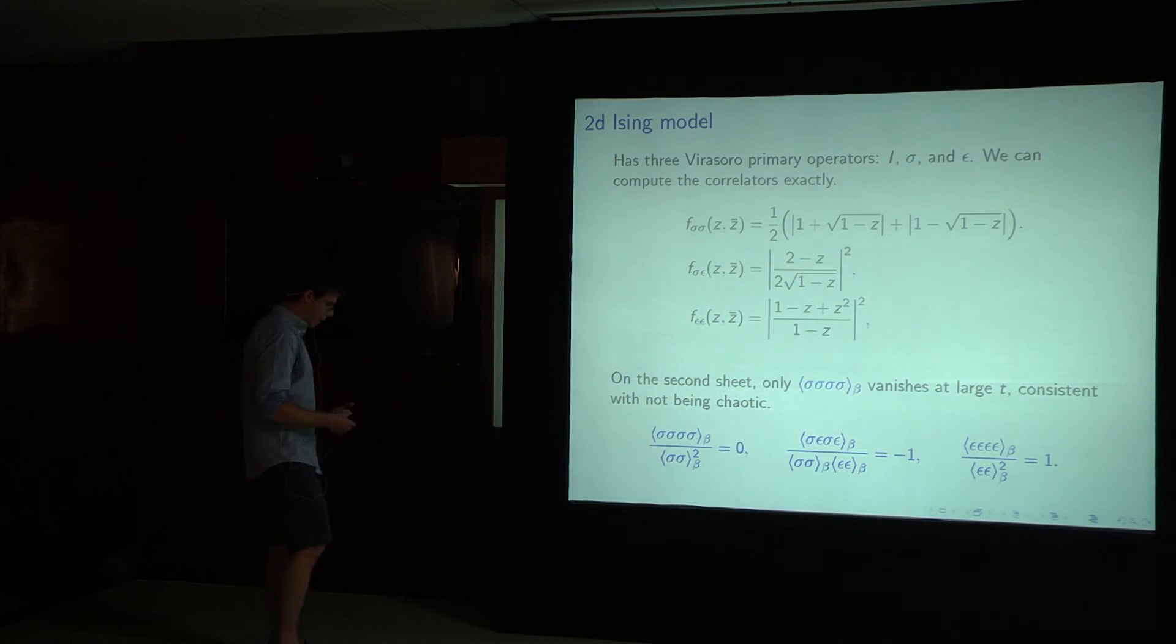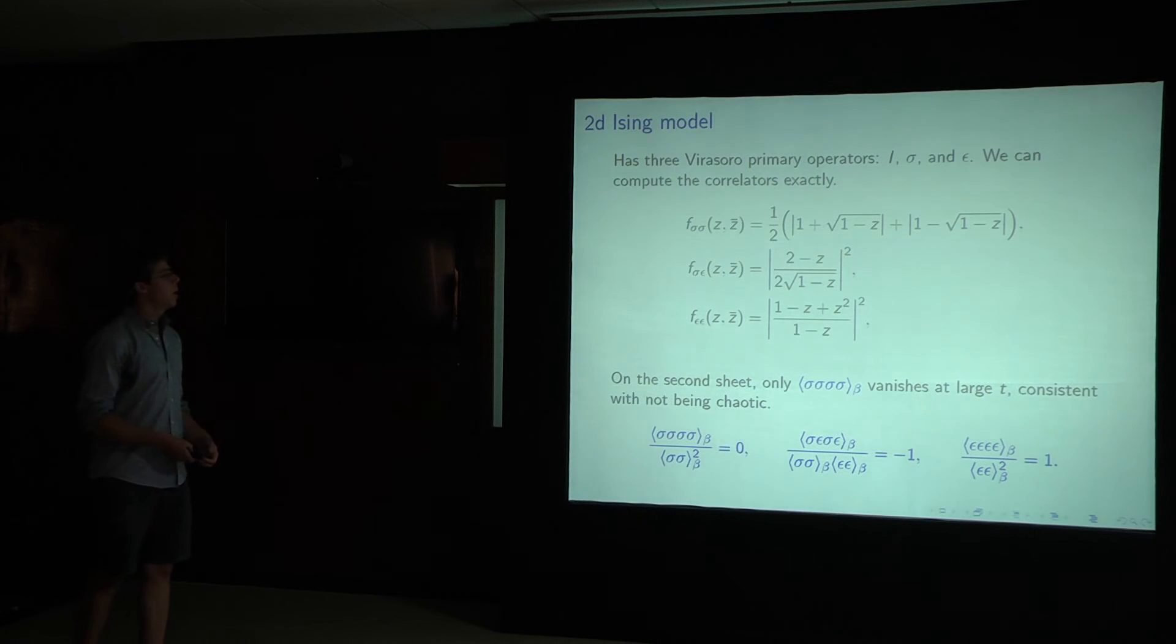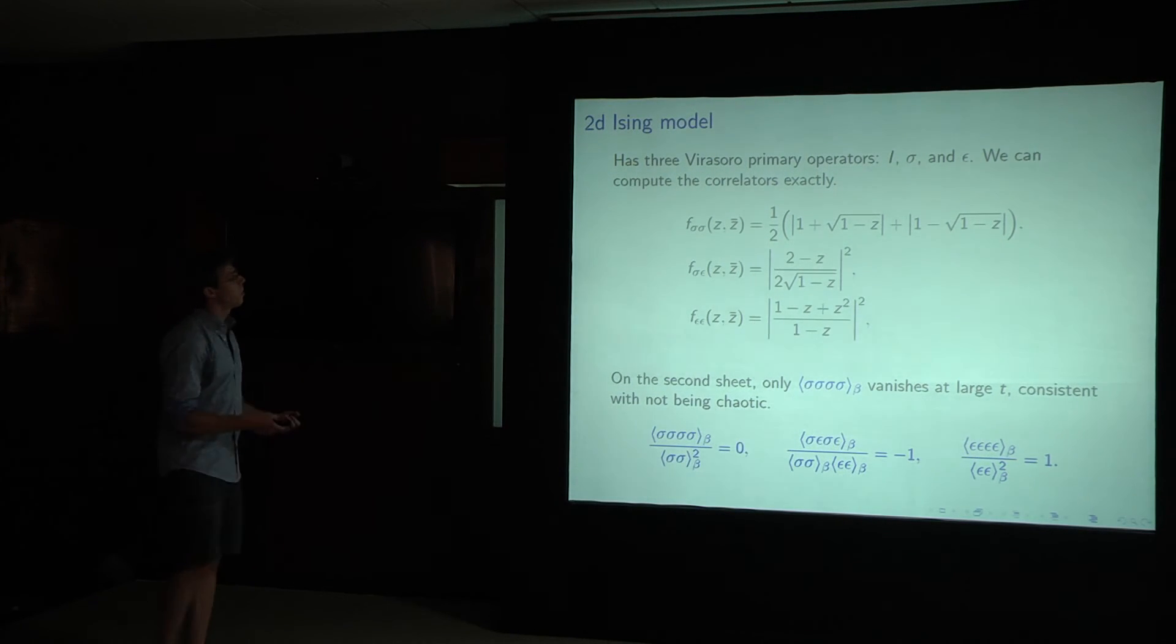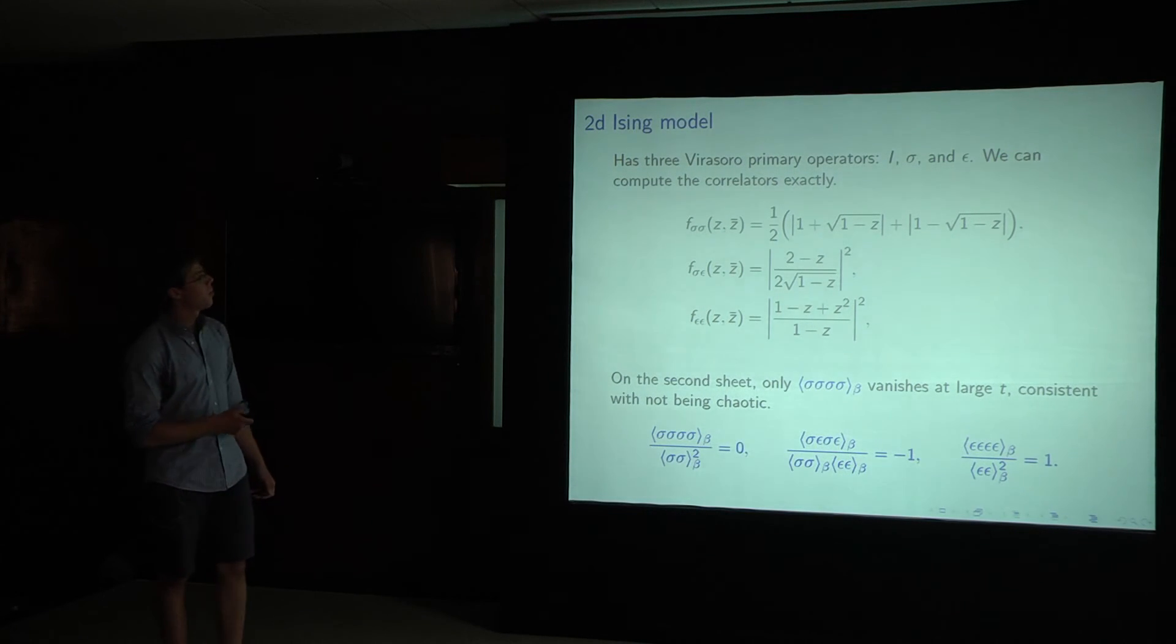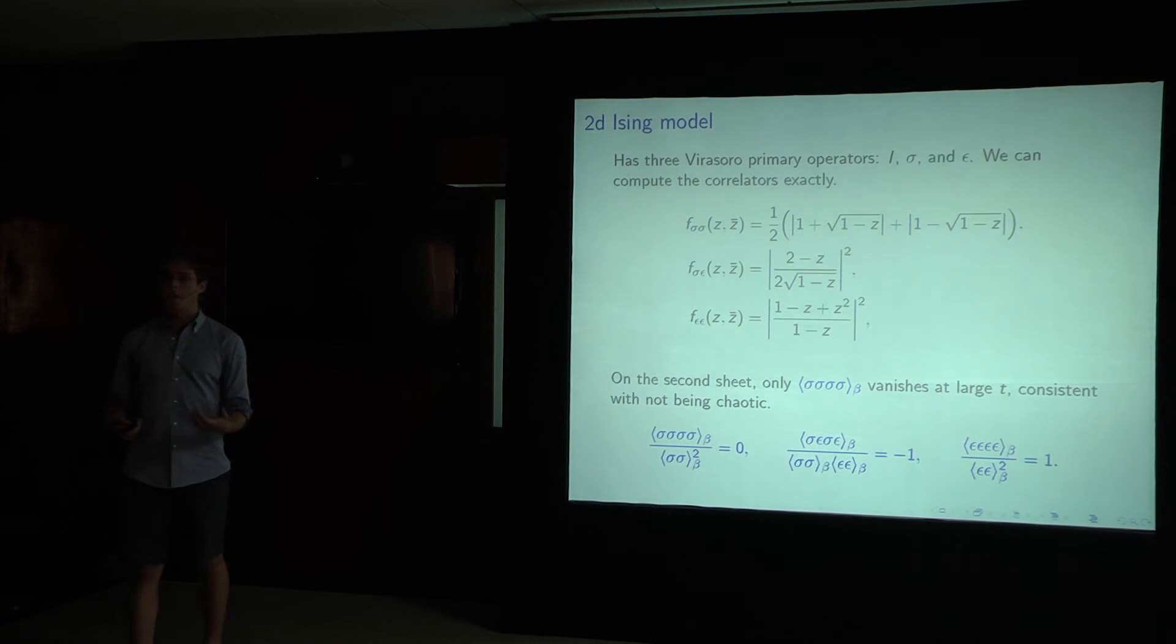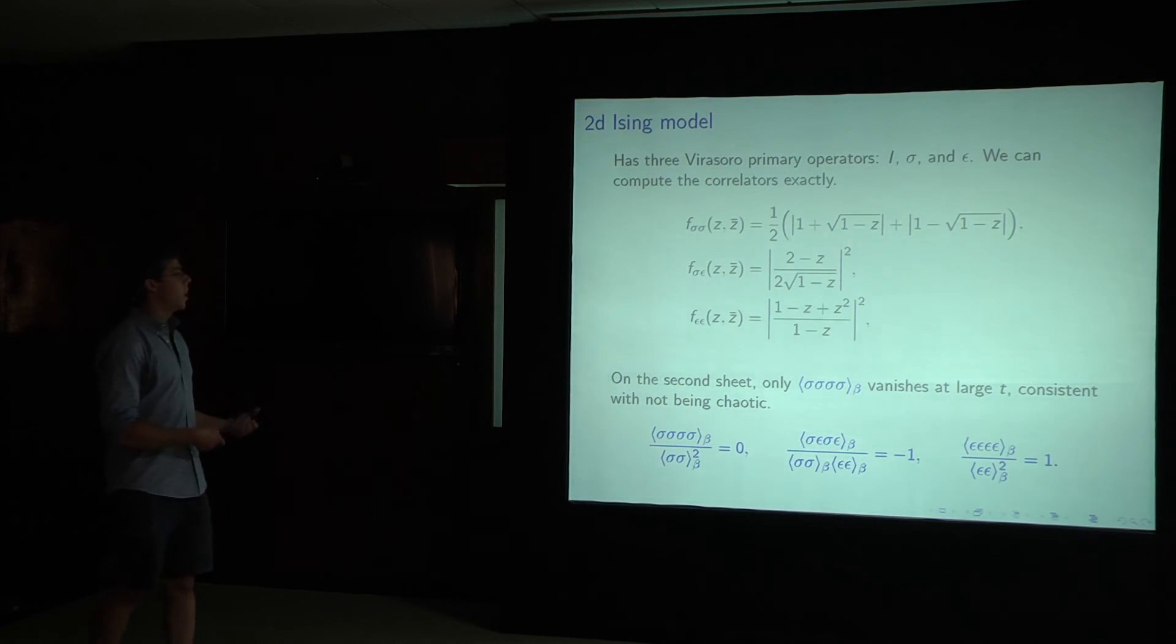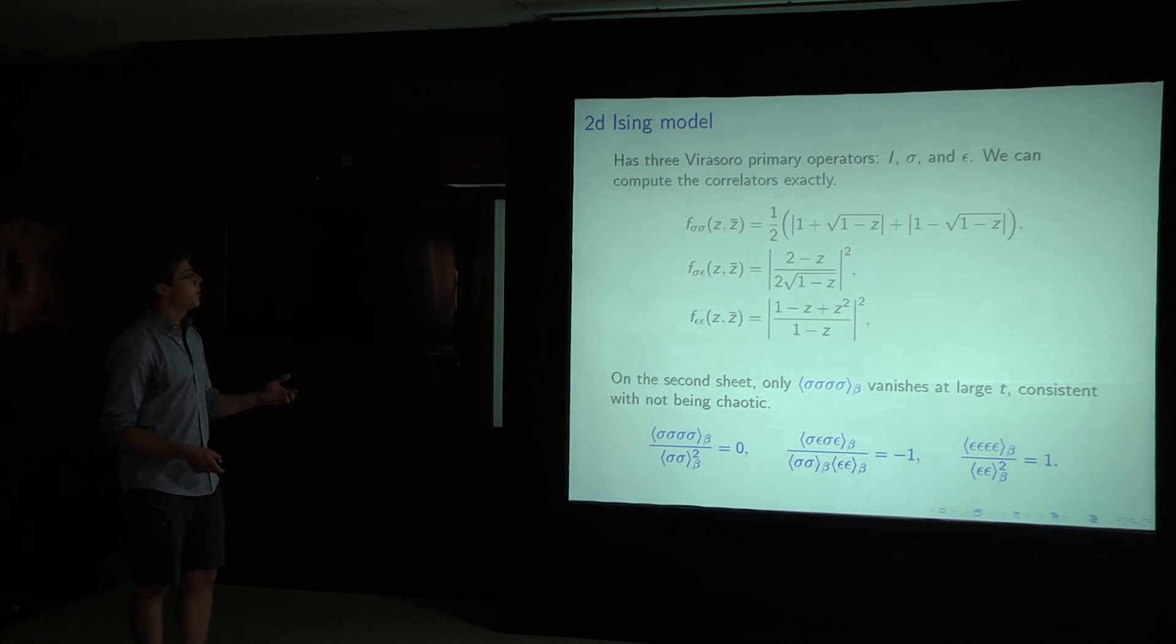Finally, for a sanity check, it's good to consider well-known, integrable systems and see that our criteria is not satisfied. So for the 2D Ising model, there's only three Virasoro primary operators, and in this case, we can compute the correlation function exactly. The conformal blocks are well-known, and so we can just evaluate for all the different combinations of these primary operators in a four-point function. On the primary sheet, everything goes to one, as expected.